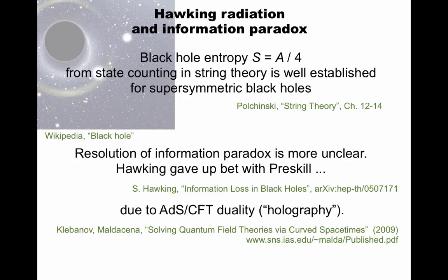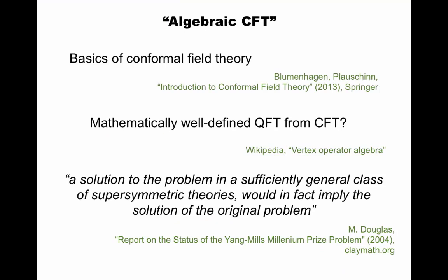I should emphasize that some people like Nima Arkani-Hamed seem to occasionally disagree with these statements here. How about the Hawking radiation information paradox? The entropy of a black hole given by the Bekenstein-Hawking formula can be computed from state counting in string theory. This works mainly for supersymmetric black holes to get the right coefficient. And this is explained in textbooks. The resolution of the information paradox is more unclear. Hawking gave up his bet with Preskill, if you know about that, due to anti-de Sitter conformal field theory duality, also known as holography.